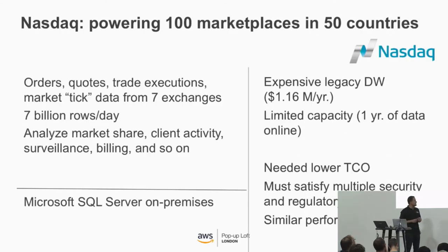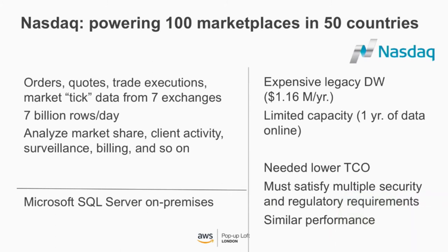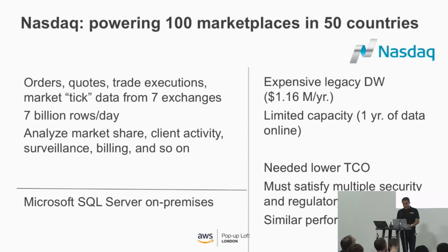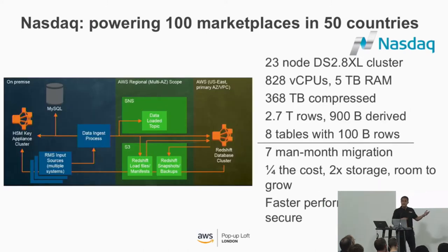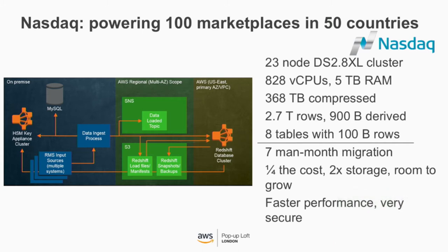NASDAQ moved from Microsoft SQL Server on-premises to Redshift as their data warehouse — completing the migration in seven man-months. They get seven billion rows of data every day and analyze market shares, client activity, surveillance, and billing. They needed to lower their TCO. Their architecture uses HSM to encrypt the data load from on-premises to S3, then loads it back to a Redshift cluster of 23 nodes DS2 8XL. They're quite happy with the performance they get.